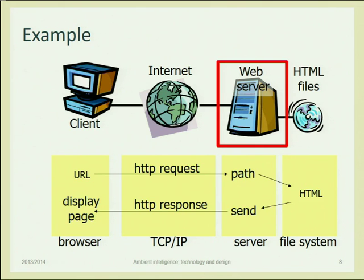The web server has no way to correlate two requests. Two requests from the same browser, same computer, same user to the same web server run as two different connections and are treated as completely different. This is one of the great ideas of the HTTP protocol: it has no memory. One request — respond and forget. There is no conversation, no memory. It's the same whether serving a hundred pages to one user or one page to a hundred users. This simplicity is why 25 years later we are still using HTTP version 1.1.